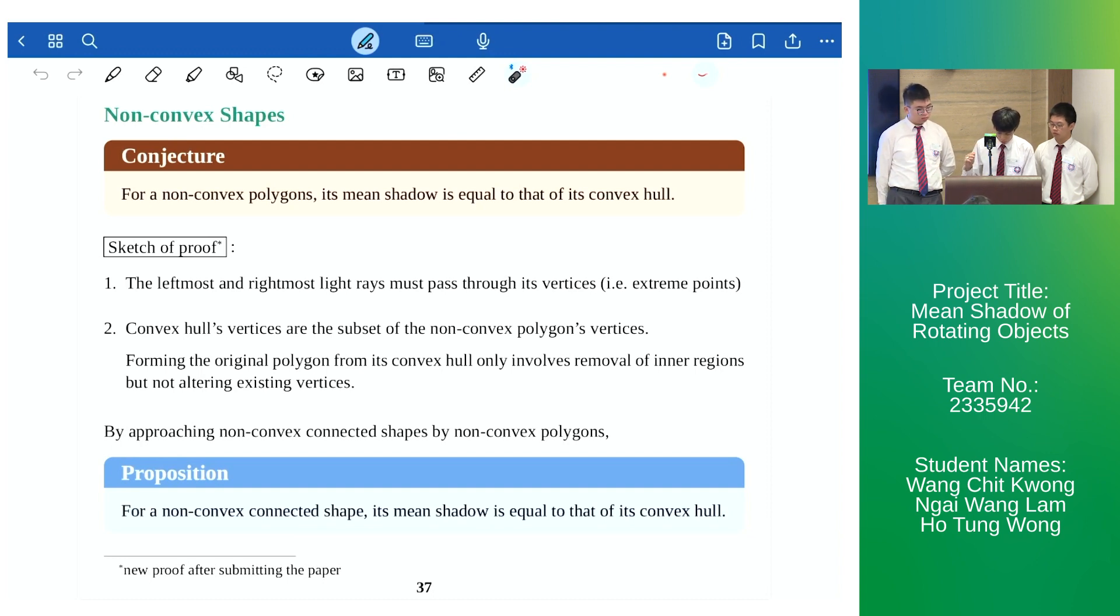As we can approach non-convex connected shapes with non-convex polygons, we propose that for non-convex connected shapes, its mean shadow is equal to the mean shadow of its convex hull.